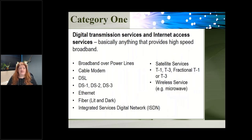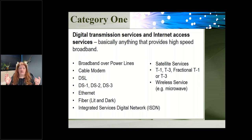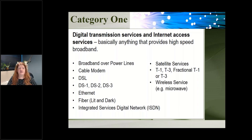Category one is basically anything that gets high-speed broadband to your building — DSL, cable modem, broadband, ethernet, wireless. This is not an exhaustive list; the eligible services list has all potential connection types. Basically anything that can get an internet connection to your building qualifies.